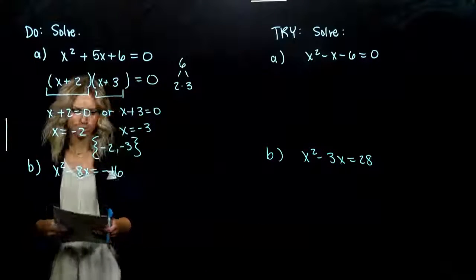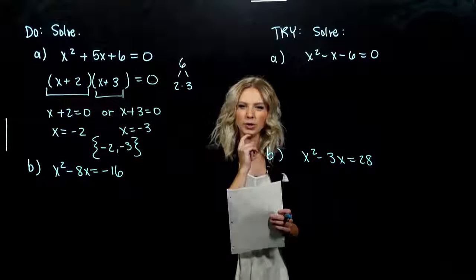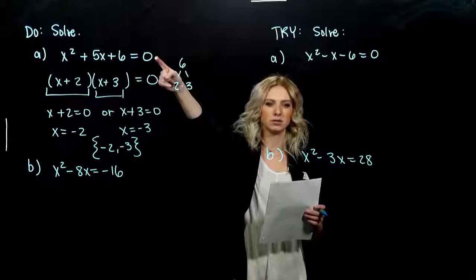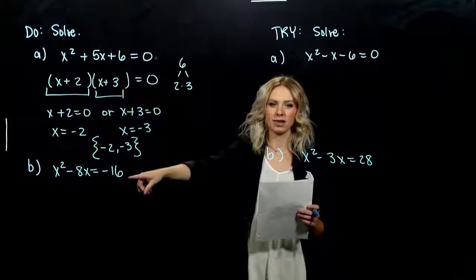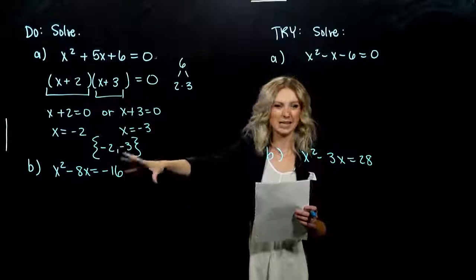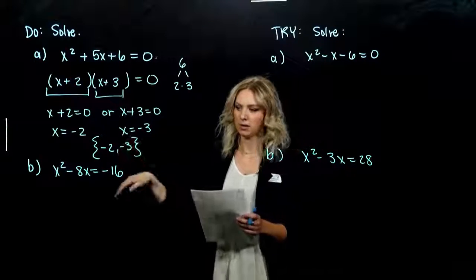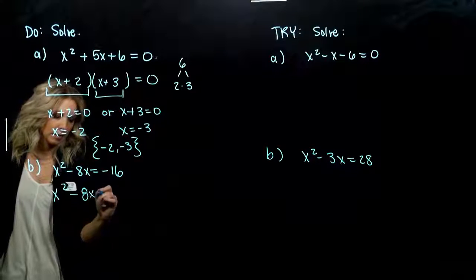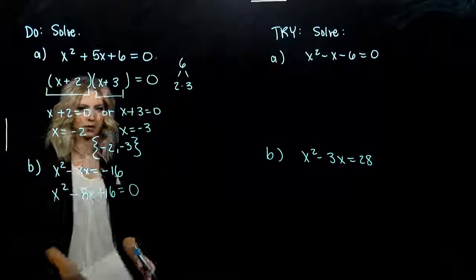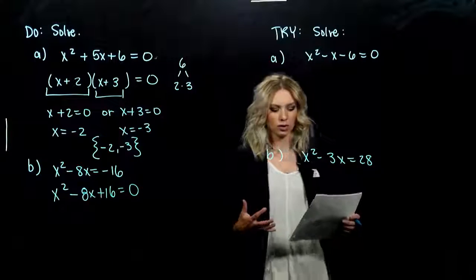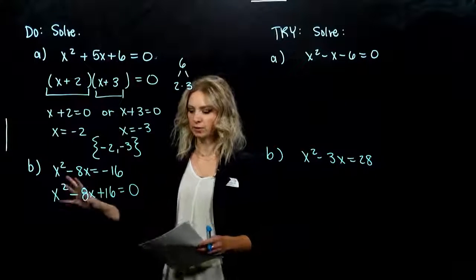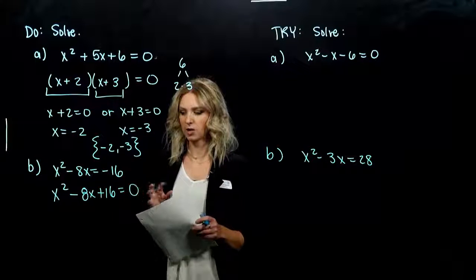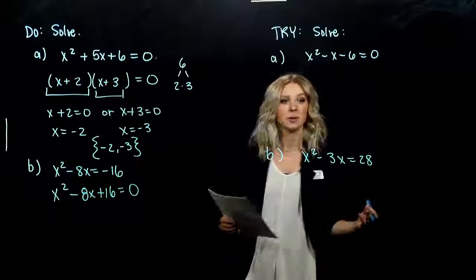For Part B, what do you notice? In all the cases we've seen before, it's been equal to 0, but right now I have it equal to negative 16. I need that to be 0, so we're going to add 16 to the other side and get x squared minus 8x plus 16 equals 0. That's always our first step — get everything on one side, set equal to 0. Now we want to factor.